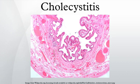Cholecystitis is inflammation of the gallbladder, which occurs most commonly due to obstruction of the cystic duct with gallstones. Blockage of the cystic duct with gallstones causes accumulation of bile in the gallbladder and increased pressure within the gallbladder. Concentrated bile, pressure, and sometimes bacterial infection irritate and damage the gallbladder wall, causing inflammation and swelling of the gallbladder.